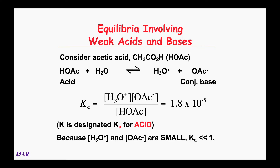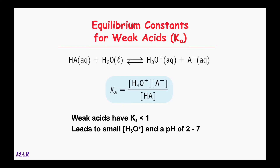The form of Ka is always the same: acid plus water making hydronium and the conjugate base. So Ka equals hydronium times acetate divided by the acid. Here's a generic representation for a random HA acid — we don't put liquids and solids in, so water is excluded. Hydronium times the conjugate base divided by the acid. Weak acids have Ka's less than one, so you have a very reactant-favored system and won't have a lot of hydronium because hydronium is a product.